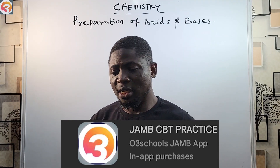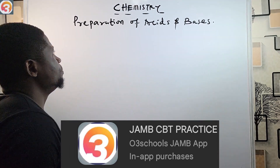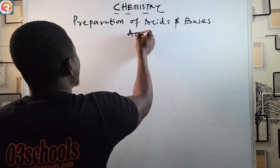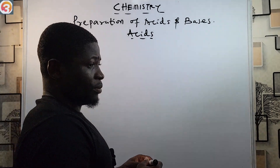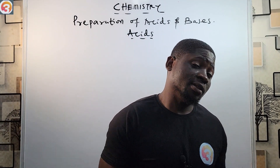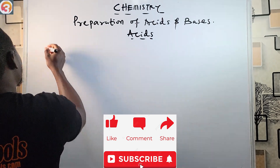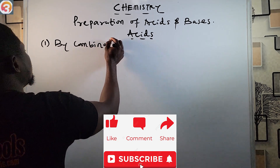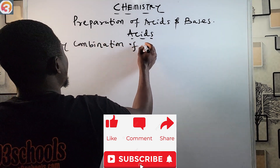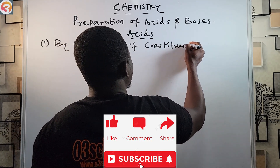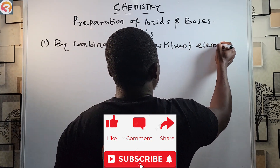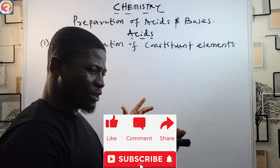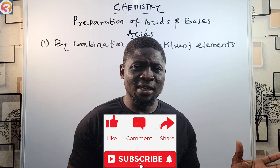Now let's head back to today's content: preparation of acids and bases. We're going to see how we prepare acids first, then move on to how to prepare bases. Number one: how do you prepare acid? The first method is by combination of constituent elements.